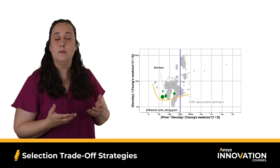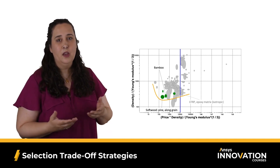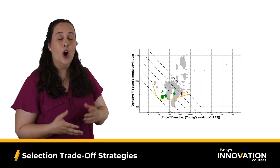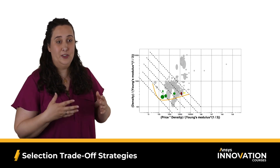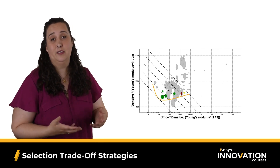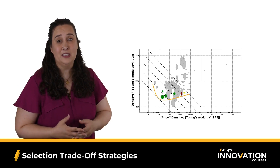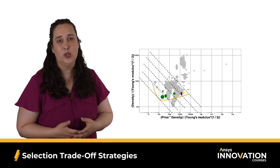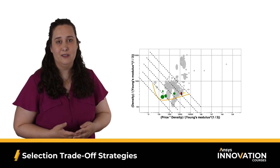The last option is more mathematical and involves what's called a penalty function. This function allows us to draw a series of parallel lines across the trade-off plot, hoping to find the tangent with the trade-off curve to define the relationship between the two objectives via the slope. This is much more complicated and not covered in this course — for more, check out Professor Mike Ashby's book, Material Selection in Mechanical Design.